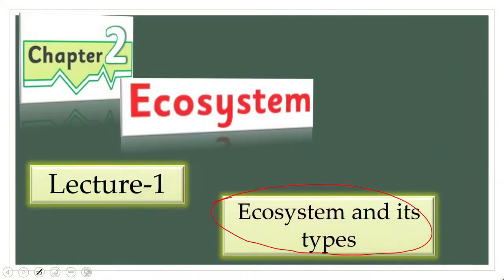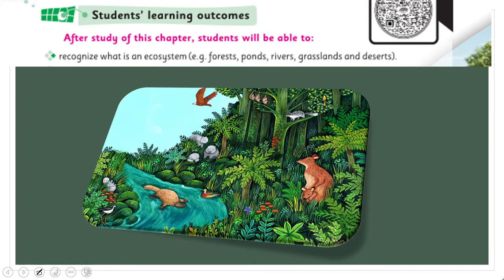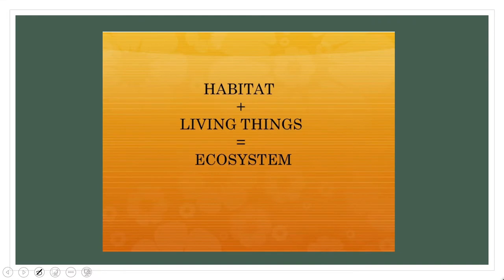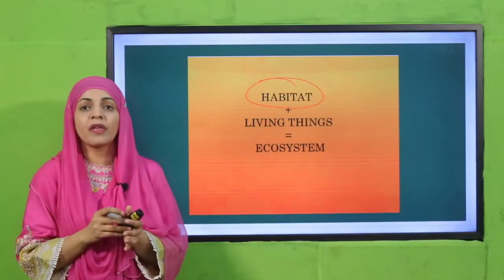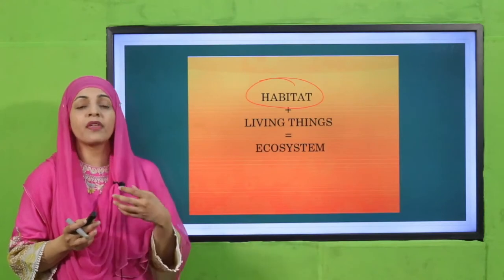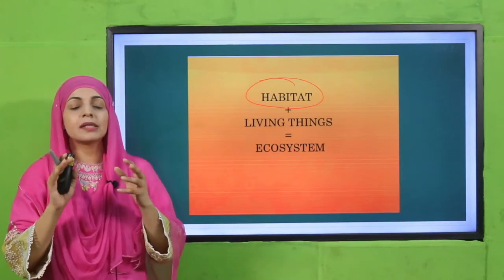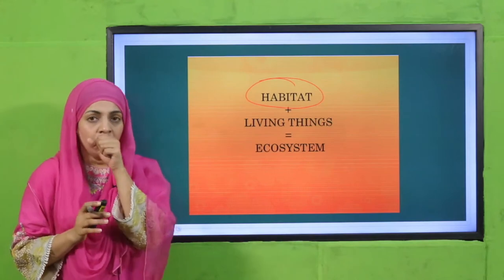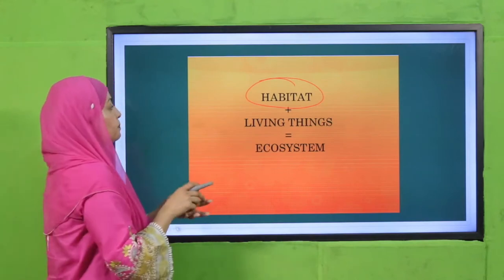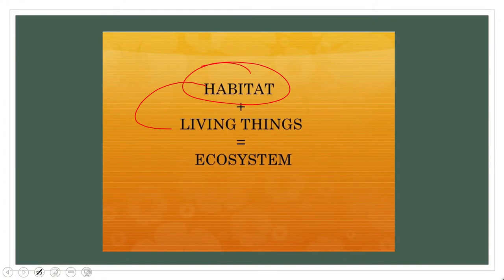By the end of this lecture, students will be able to recognize what is an ecosystem, and we will discuss forests and rivers in particular. In the previous classes we discussed that a habitat is a home for animals and plants — where they live, where they grow, where they reproduce. When a habitat and living things interact, they form an ecosystem.